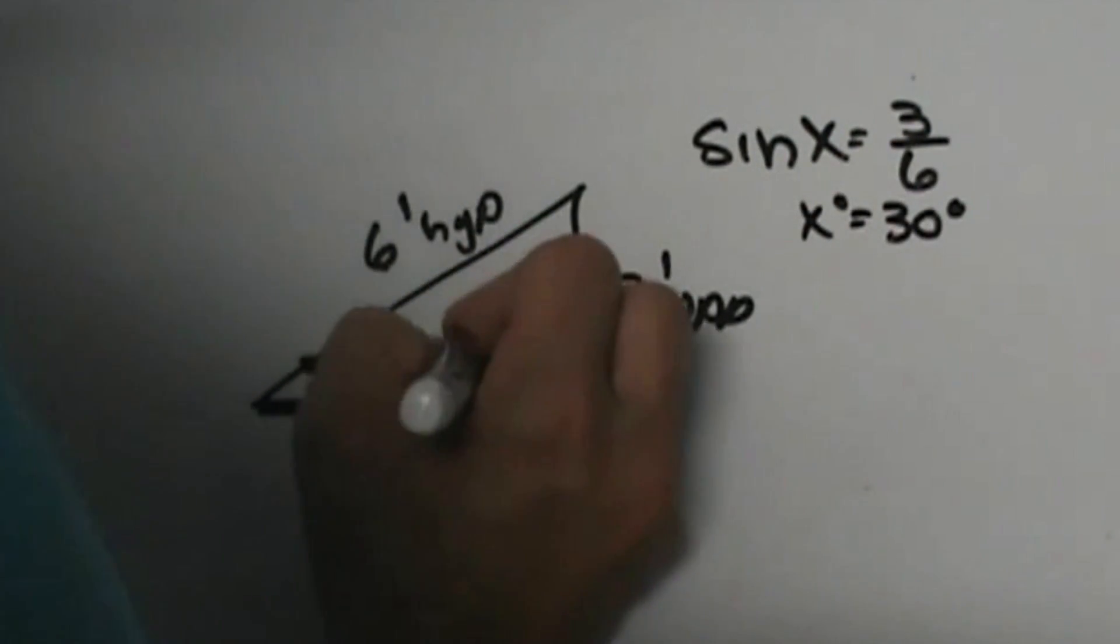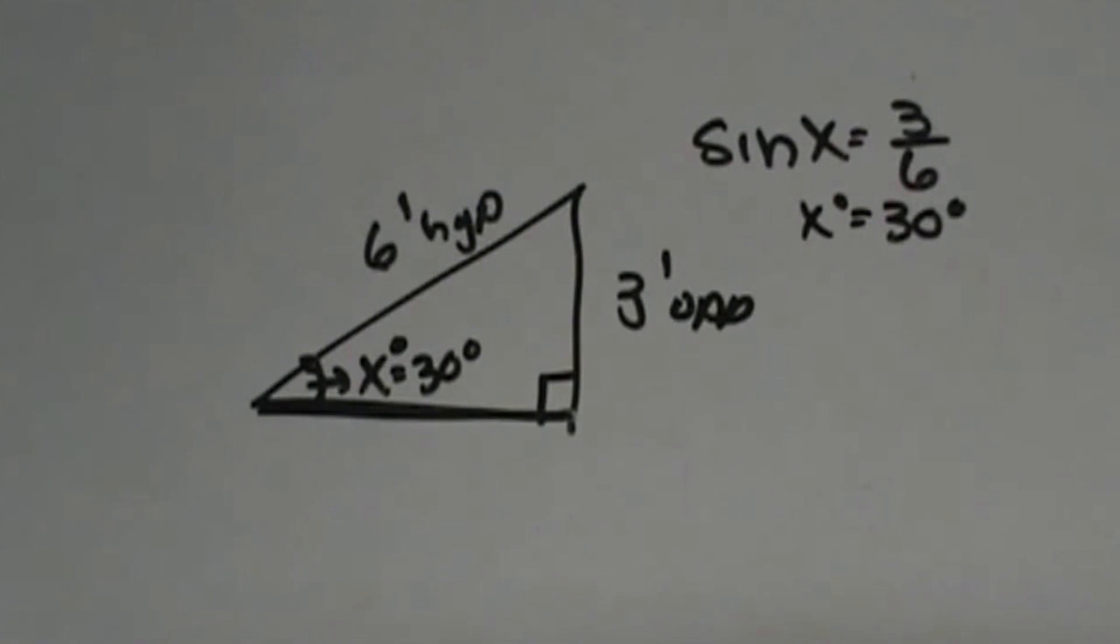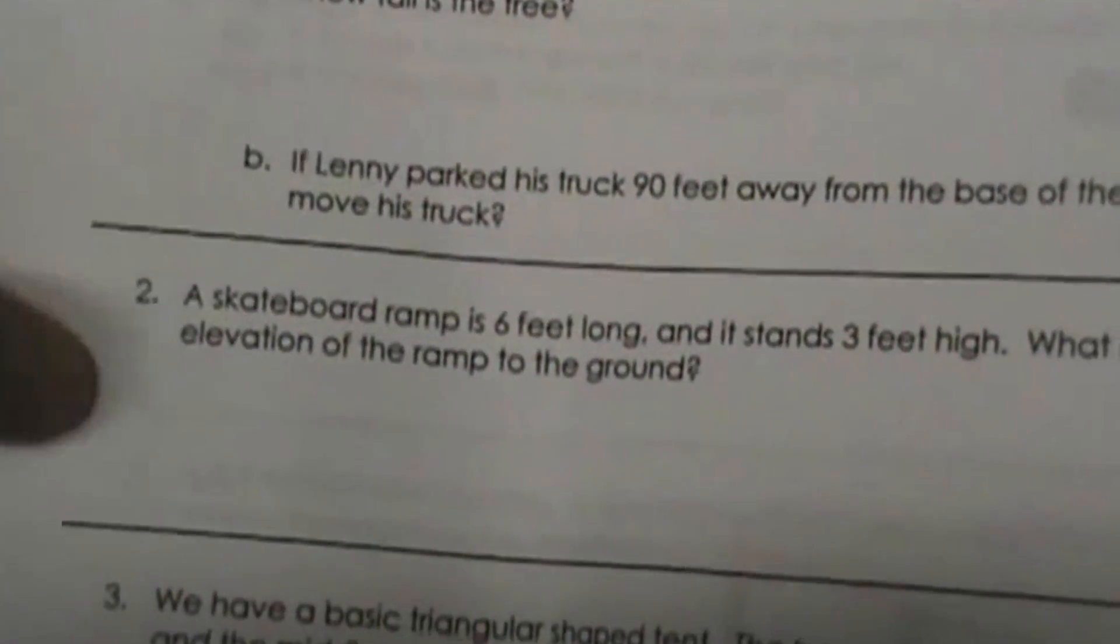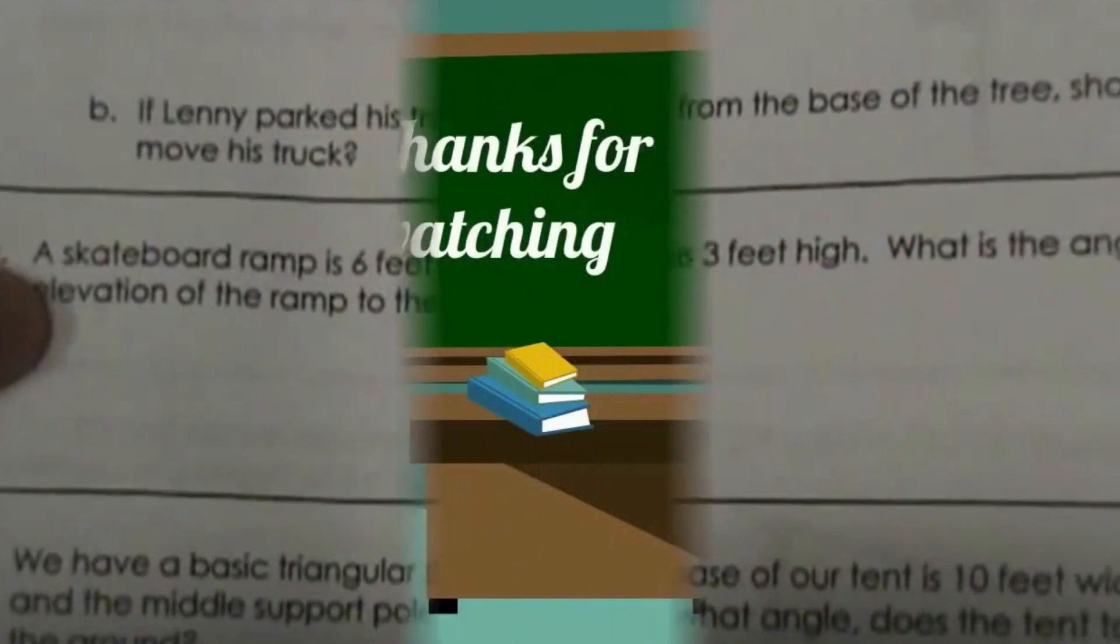So the ramp has a 30 degree angle. And that's all that one was - just what is the angle of elevation of the ramp. So we drew that one and solved that one fairly easily, but that was a backwards problem.